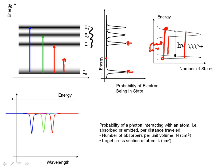And as we'll see in a little bit, the photon or the probability of a photon interacting with an atom, i.e. being absorbed or emitted, depends on the number of things it can interact with, the number per unit volume and also what's called the cross-section. And think of this as just the probability of it hitting it.